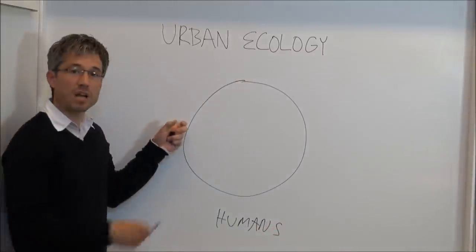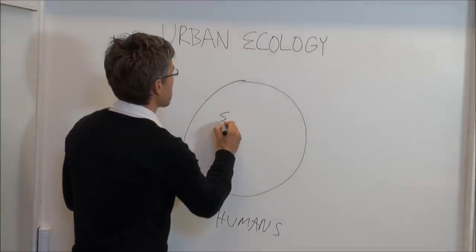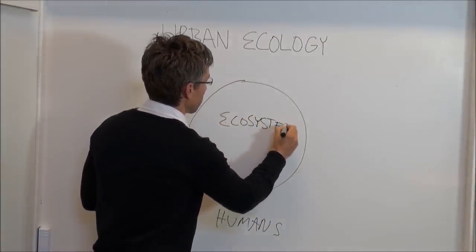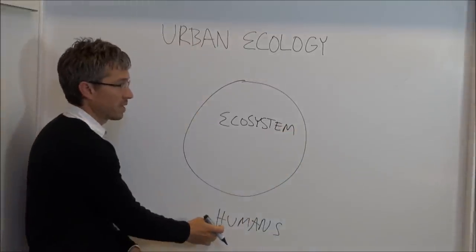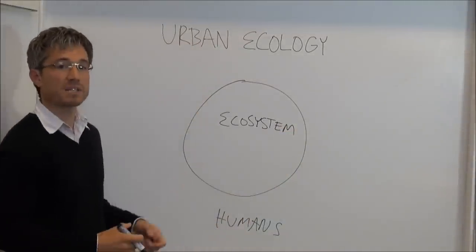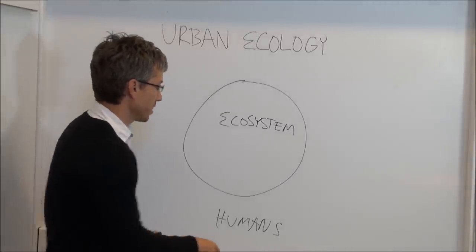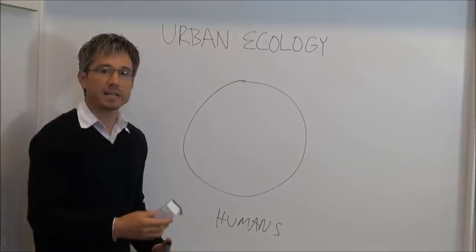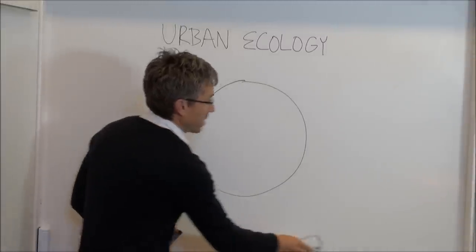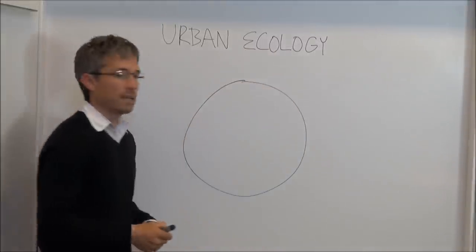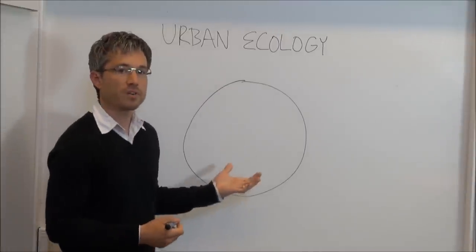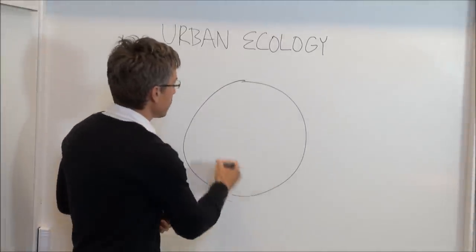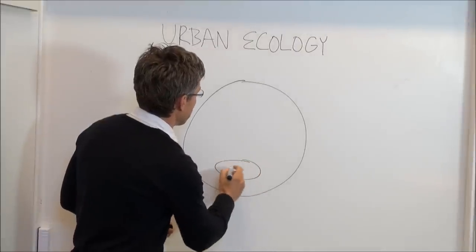So, if this circle describes the boundaries of an ecosystem, then humans were here, not part of the internal dynamics of the system. Urban ecology, in contrast, focuses explicitly on human-dominated landscapes and urbanized regions. And in urban ecology, we intentionally focus on humans as fundamental elements within the system — so we move humans here, inside the system.